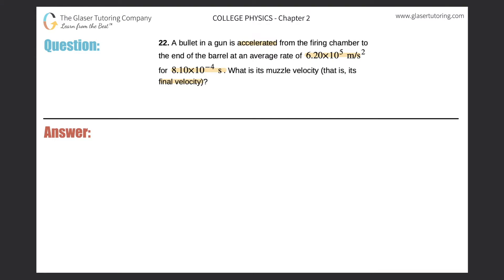So let's write down what we're given. It says that the bullet is accelerated at this particular rate of 6.2 times 10 to the 5. So acceleration is equal to 6.02 times 10 to the 5 meters per second squared. It also says that it is traveling with this acceleration for 8.1 times 10 to the minus 4 seconds. So 8.10 times 10 to the minus 4 seconds.